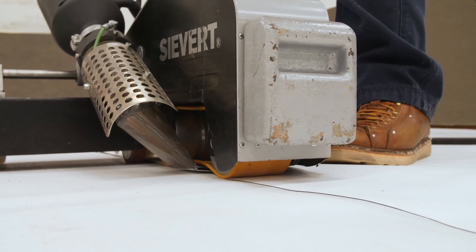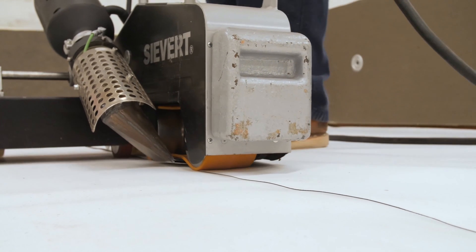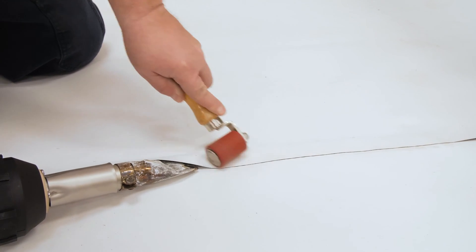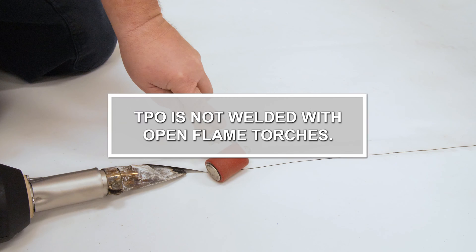There are two basic methods to hot air weld: automatic welder or robot, and hand welding with an electric heat gun. TPO is not welded with open flame torches.